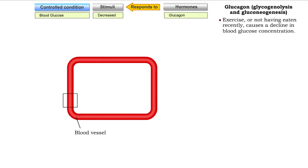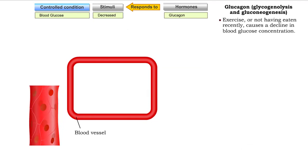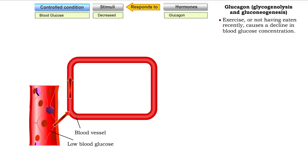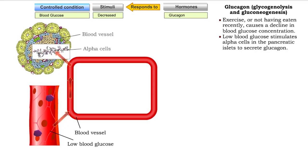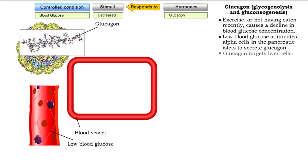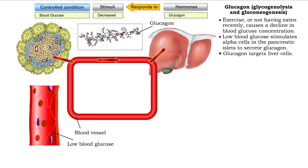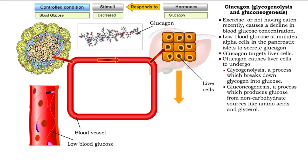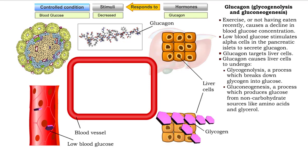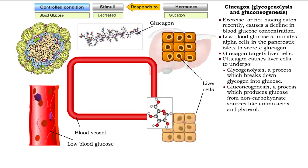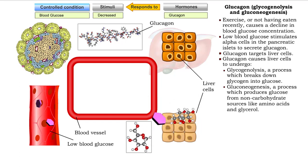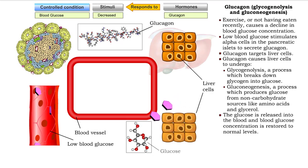Exercise, or not having recently eaten, causes a decline in blood glucose concentration that stimulates alpha cells in the pancreatic islets to secrete glucagon. Glucagon targets liver cells and causes them to undergo glycogenolysis, a process that breaks down glycogen into glucose. It also promotes the formation of glucose from non-carbohydrate sources, a process called gluconeogenesis. The glucose is released into the blood and blood glucose concentration is restored to normal levels.